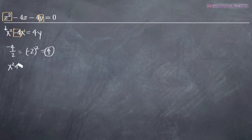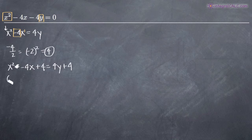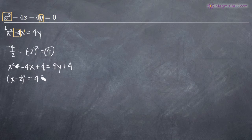We have to add 4 to both sides so we don't fundamentally change the equation. Now we can factor the left-hand side into x minus 2 squared. On the right-hand side, we factor out a 4 to get 4 times the quantity y plus 1.